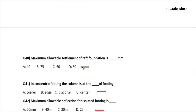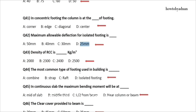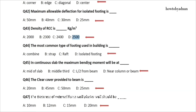Question 40: The maximum allowable settlement of raft foundation is how many mm? The answer is option D: 50. Question 41: In concentric footing, the column is at the what of footing? The answer is option D: Center. Question 42: The maximum allowable deflection for isolated footing is? The answer is option D: 25 millimeters. Question 43: The density of RCC is how many kg per cubic meter? The answer is option D: 2,500. Question 44: The most common type of footing used in a building is? The answer is option D: Isolated footing.